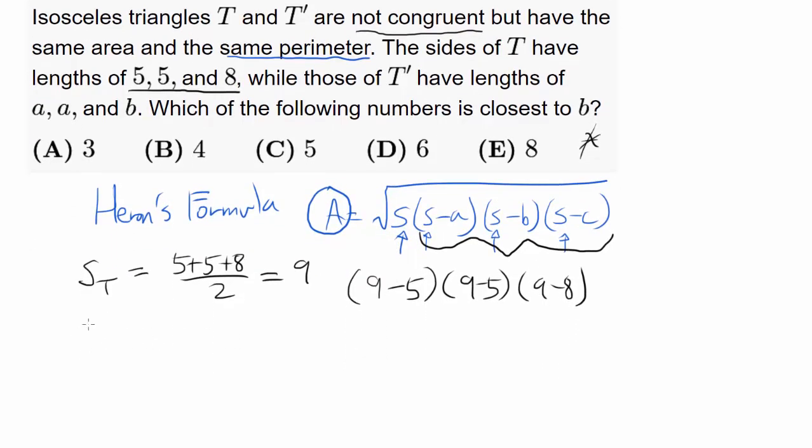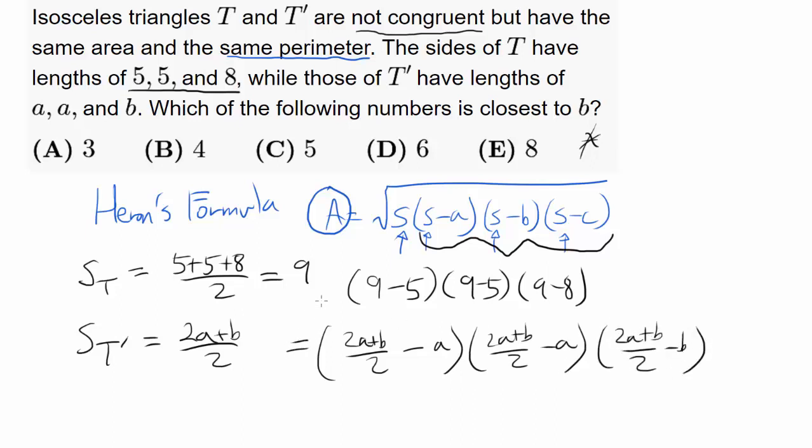What is semi-perimeter for T prime? That's A plus A plus B or 2A plus B divided by 2. So we have 2A plus B divided by 2 minus A, 2A plus B divided by 2 minus A once again, 2A plus B divided by 2 minus B. And you want these two expressions to be the same.